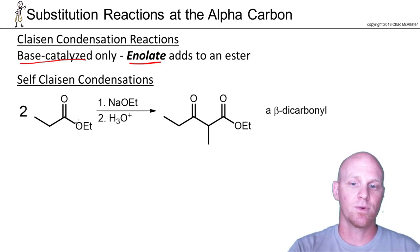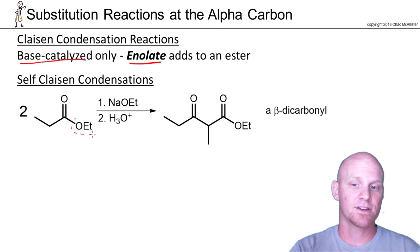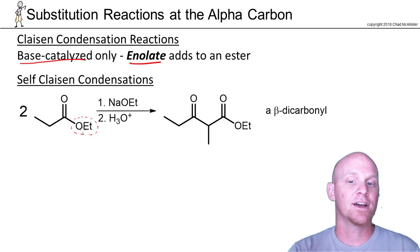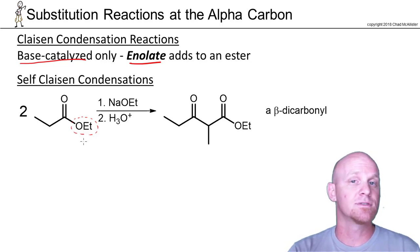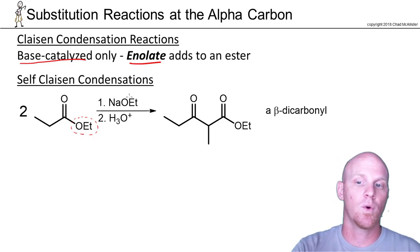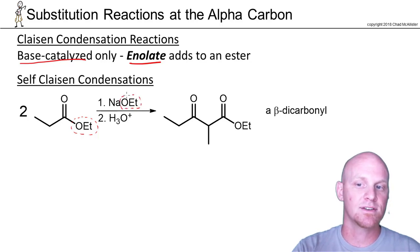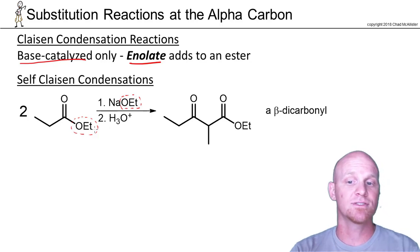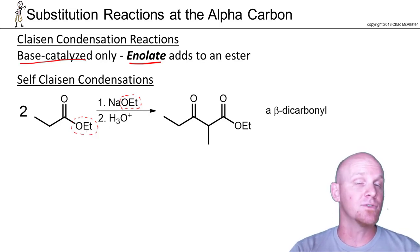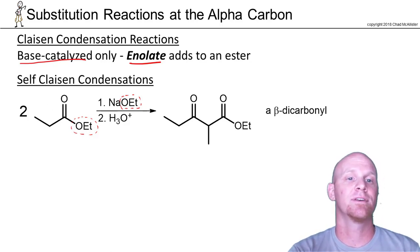With esters being susceptible to nucleophilic acyl substitution, we have to be careful what we use as our strong base to form the enolate. If we simply added hydroxide, it would do nucleophilic acyl substitution and we'd get a carboxylate. If we used methoxide, we'd get transesterification and our OEt would get exchanged for OMe. So what we do is always use whatever the leaving group of our particular ester is as the base. Here we'll use sodium ethoxide, so if nucleophilic acyl substitution takes place we're just replacing an ethoxide with another ethoxide and can't tell the difference.